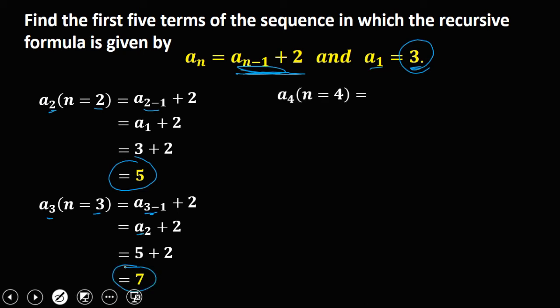Then for a sub 4, n equals 4. We have a sub 4 minus 1 plus 2, then 4 minus 1 is 3, plus 2. Substituting the value of a sub 3, which is 7, so 7 plus 2, and a sub 4 is now 9.